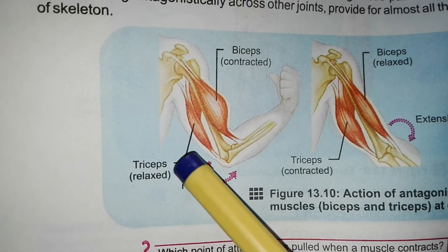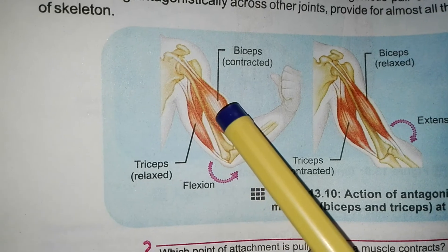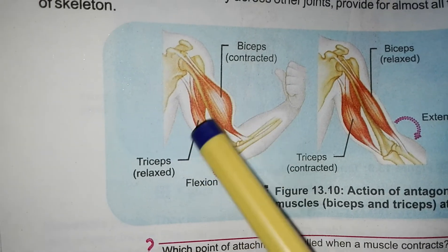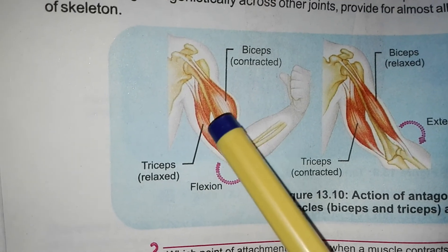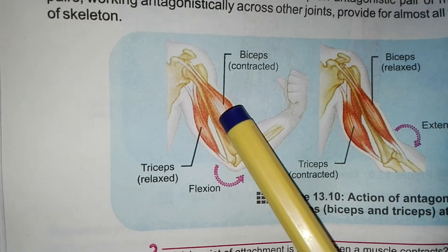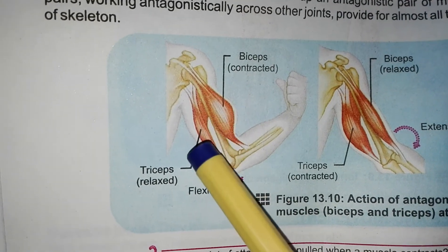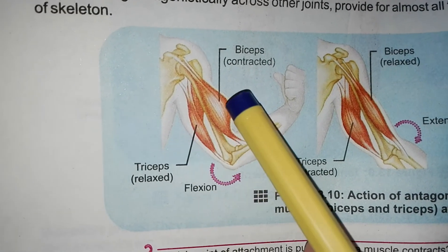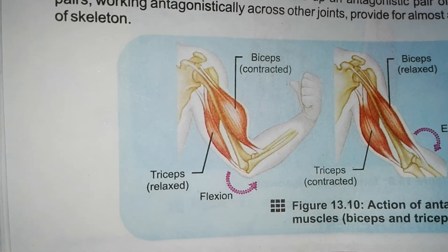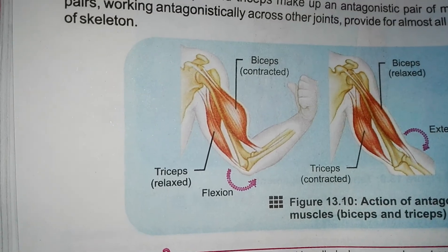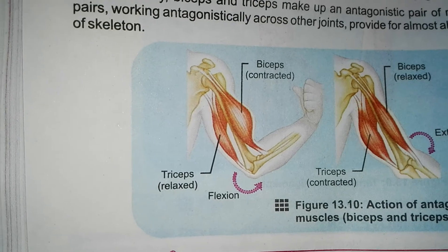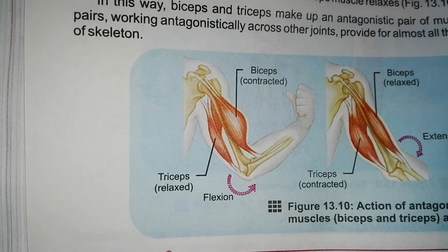Antagonism means that when one muscle contracts, the other muscle relaxes. They cannot both contract at the same time. This is called antagonistic action — they do opposite jobs.